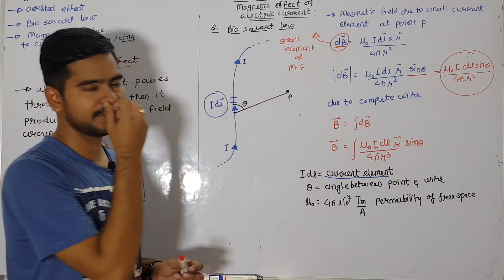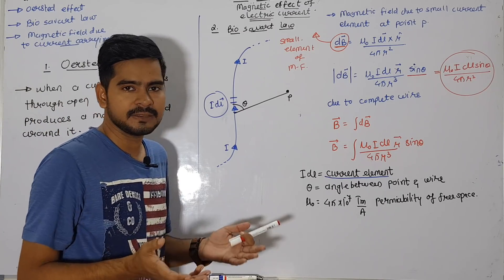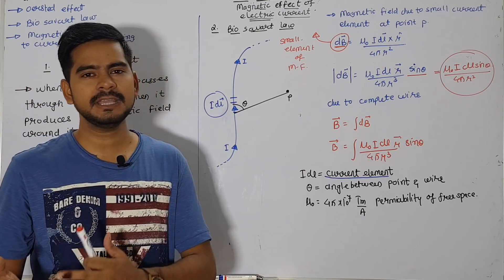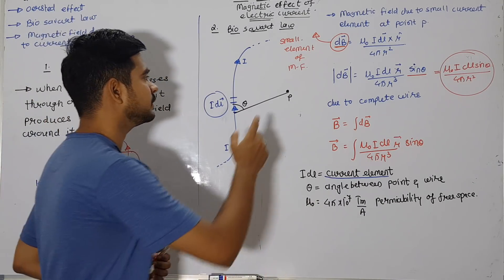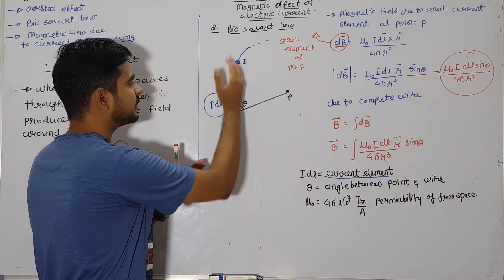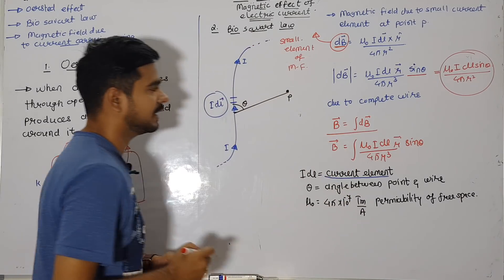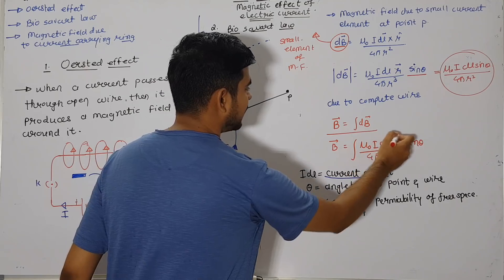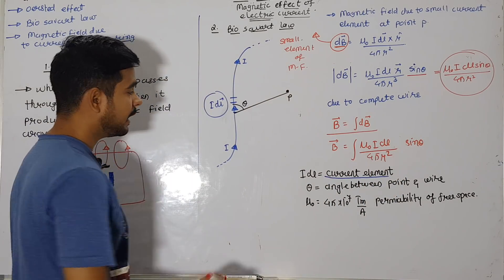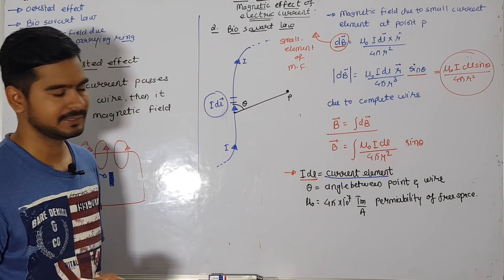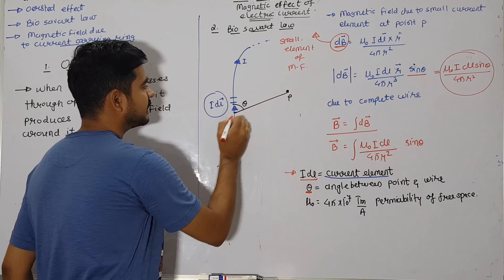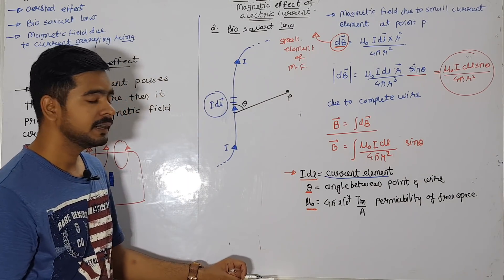To get the magnetic field due to the complete wire, we integrate: B = ∫dB = ∫μ₀ idl sinθ / (4πr²). The term idl is the current element, theta is the angle between the point and the wire, and μ₀ (mu naught) is equal to 4π × 10⁻⁷ tesla·meter per ampere, which is the permeability of free space.